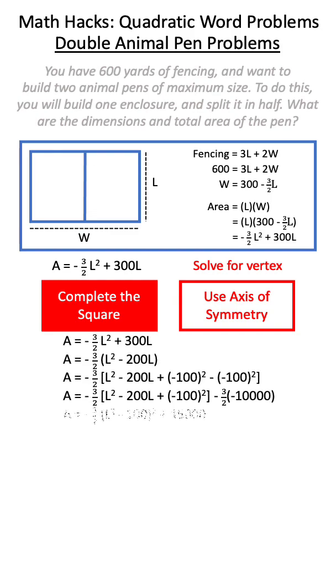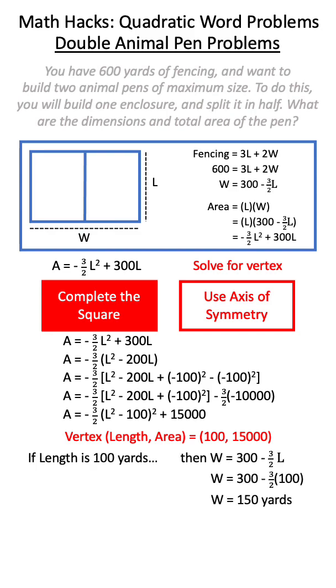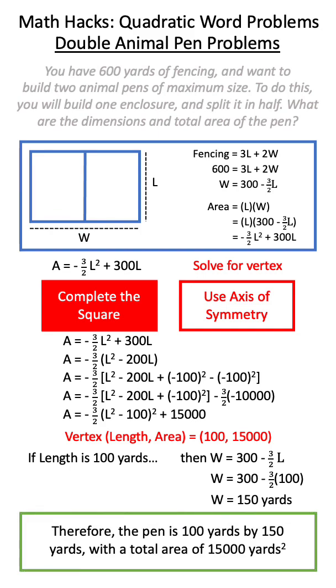If we complete the square in this relationship, what we determine is we get a vertex of 100 by 15,000. If our length is 100 yards, it will mean our width is 150 yards, and the total area of our enclosure is 15,000 yards squared.